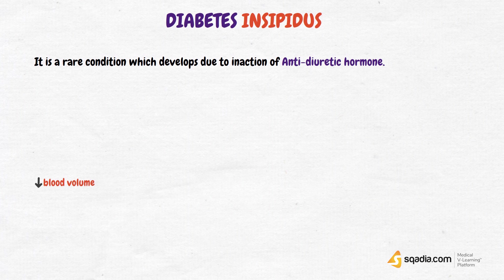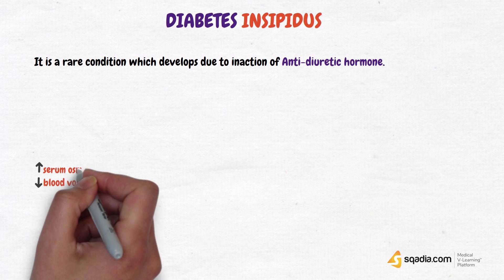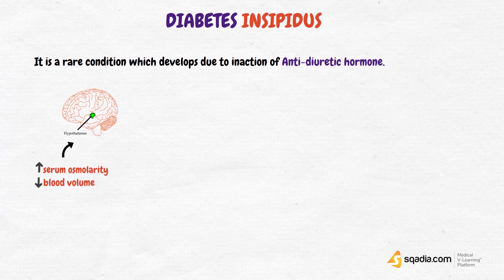Normally, low blood volume and high serum osmolarity stimulates the hypothalamus to produce ADH, which goes to the posterior pituitary gland and is then released into the bloodstream.